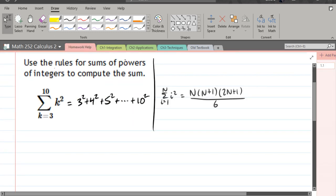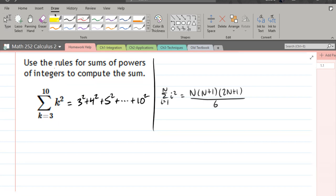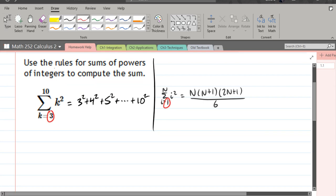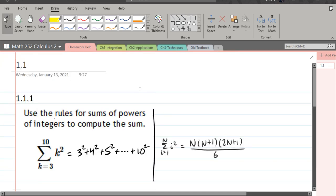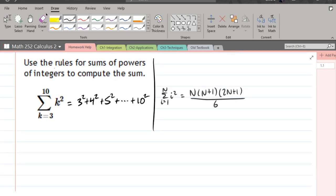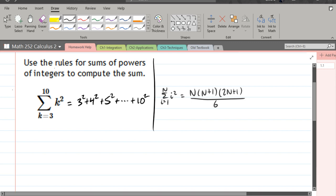First thing to notice, we are starting at 3, not at 1. So let's address that problem first. This is called re-indexing. Let's go ahead and I'm going to write down the summation from k equals 1 to 10. It is not equal to the original here, so this is not the same thing.